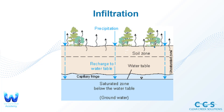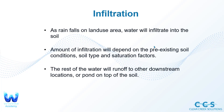What happens to that water when it rains on the ground? That precipitation is either going to evaporate back into the atmosphere, or a lot of times it's going to infiltrate into the soil, into different soil zones, or infiltrate all the way down to the water table. The saturated zone is below the water table, and that's the natural occurring groundwater between the capillary fringe. The amount of infiltration will depend on the pre-existing soil conditions, soil type, and the different saturation factors. Is the soil already saturated? If so, it's not going to infiltrate. What kind of soil is it — till or outwash? The rest of the water will run off to other downstream locations or pond on top of the soil.